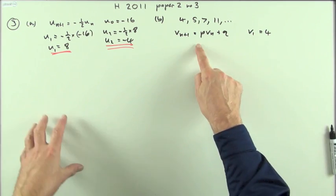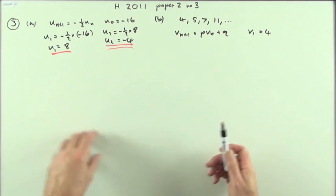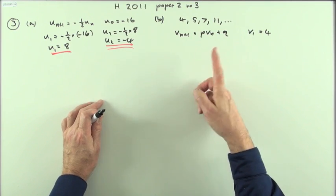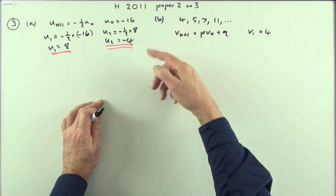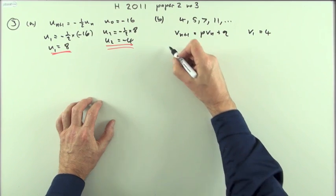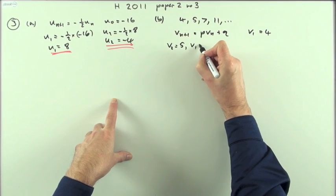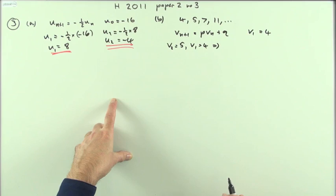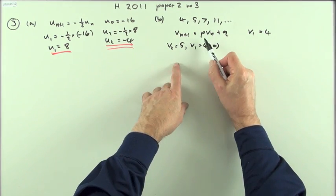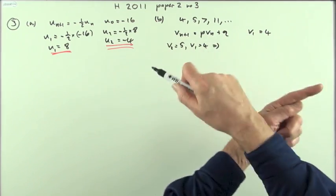Well, that should be simultaneous equations then, because there's two unknowns. I need two equations and two unknowns, and there's several I can make up because 5 came from 4, 7 came from 5, 11 came from 7.